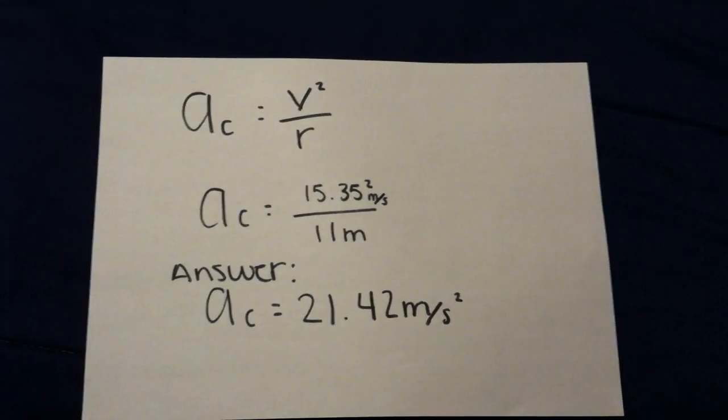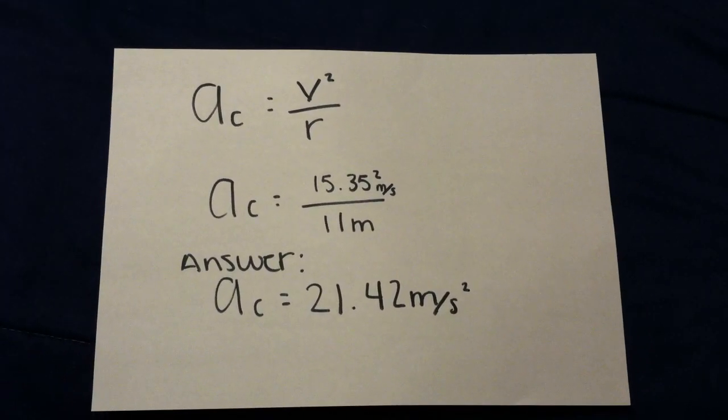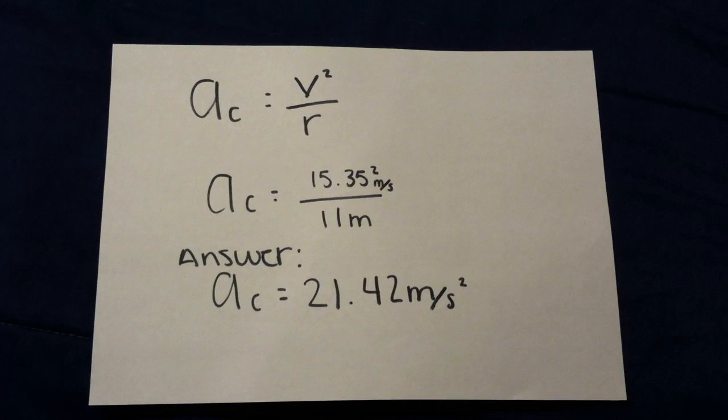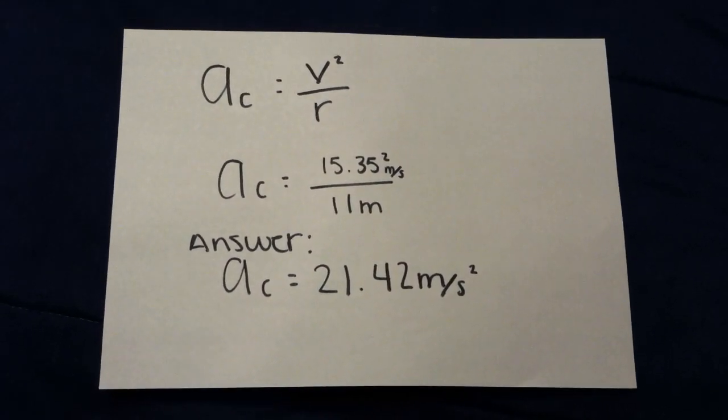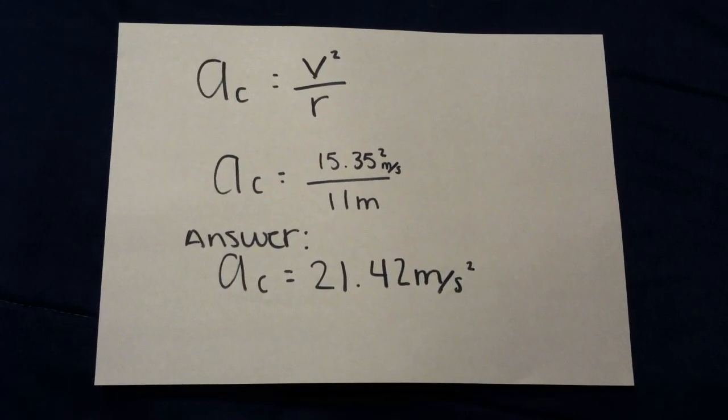Next we had to find the centripetal acceleration and we put the given in, which was 15.35 squared divided by 11 meters. And the answer to the acceleration is 21.42 meters per second squared.